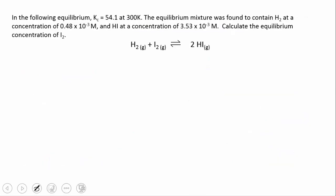Here's another problem. In this one we've got the reaction between hydrogen gas and iodine gas to give hydrogen iodide. We're told Kc at a particular temperature and we're told that at equilibrium the mixture is found to contain hydrogen at this concentration and hydrogen iodide at this concentration. And you're asked to calculate the equilibrium concentration of iodine.